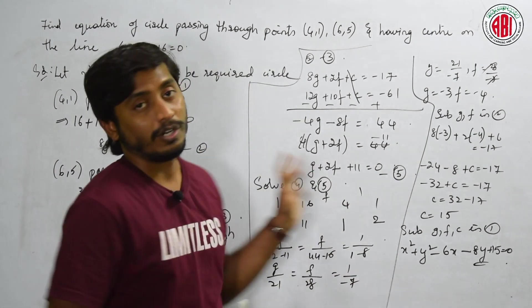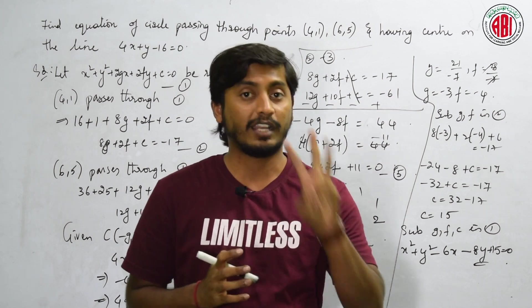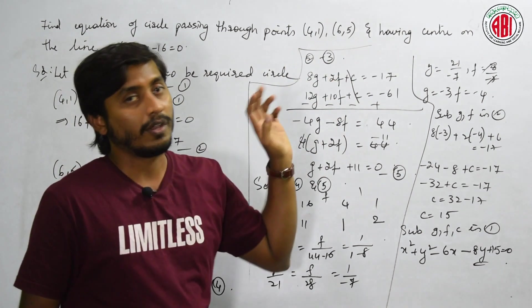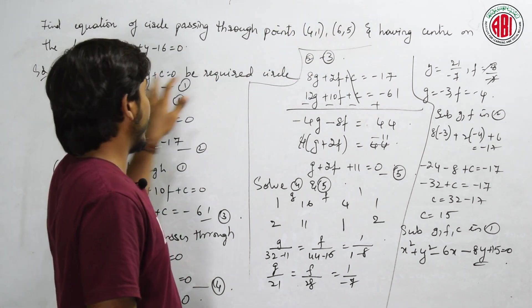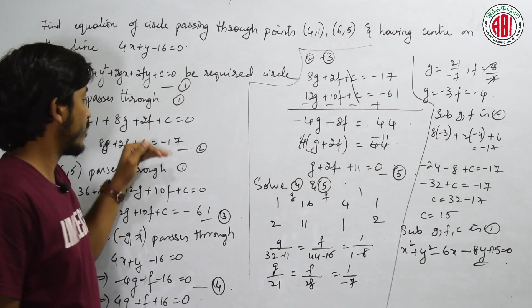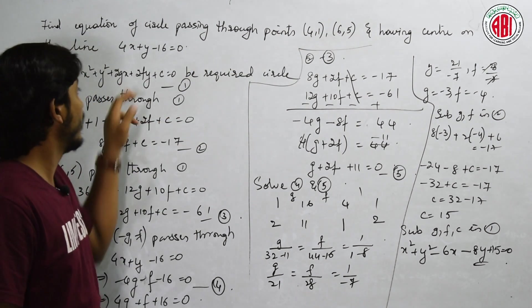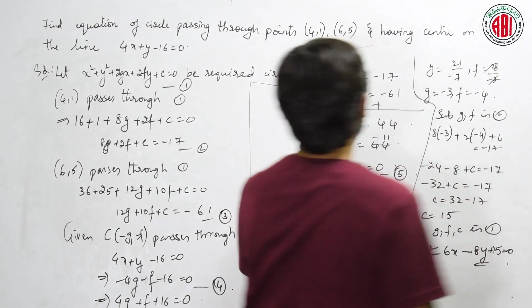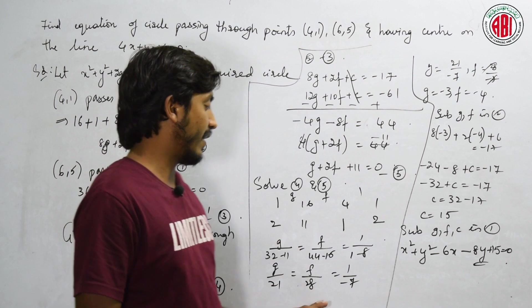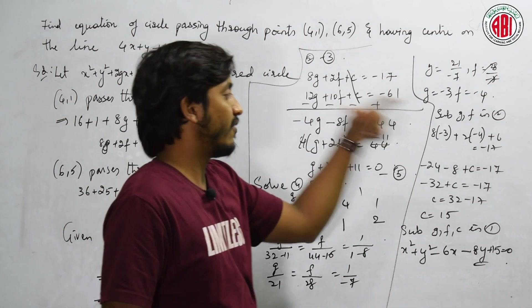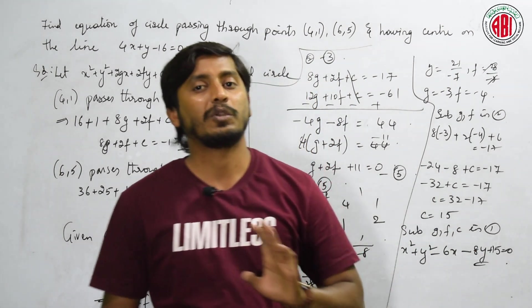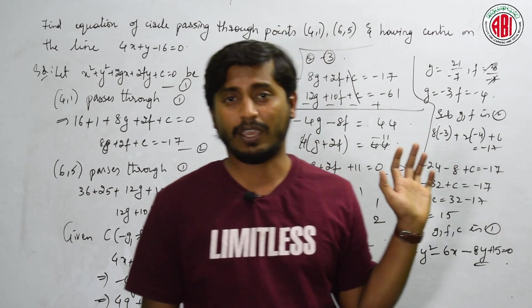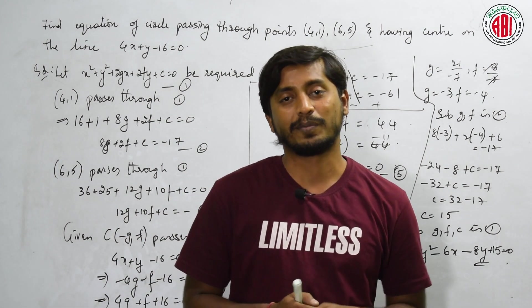What all problems did we do today? We started with finding the equation when three points are given — we did two problems of that kind. Then they gave two points with the center passing through a line, so minus g comma minus f passes through the line giving one more equation. Solving equations 5 and 4 gives g and f. Substituting in any equation gives c, and substituting g, f, c in equation 1 gives the required equation. Hope everything is clear for today. Let us meet in the next session with more problems on circles. Thank you.